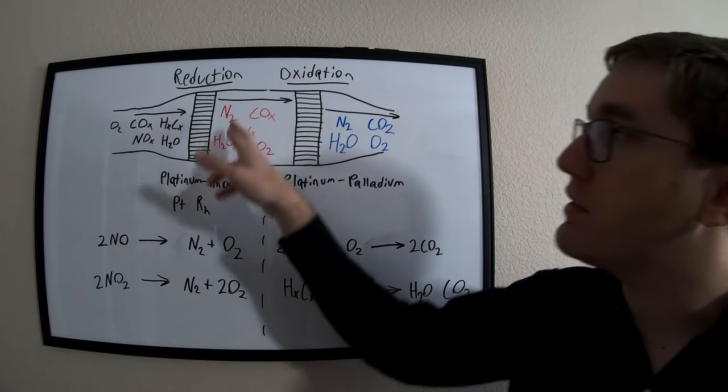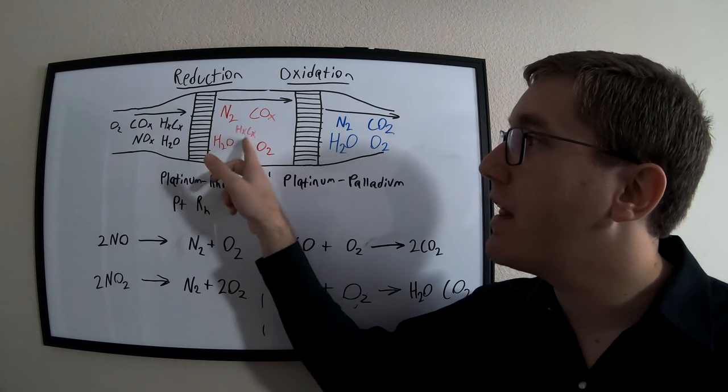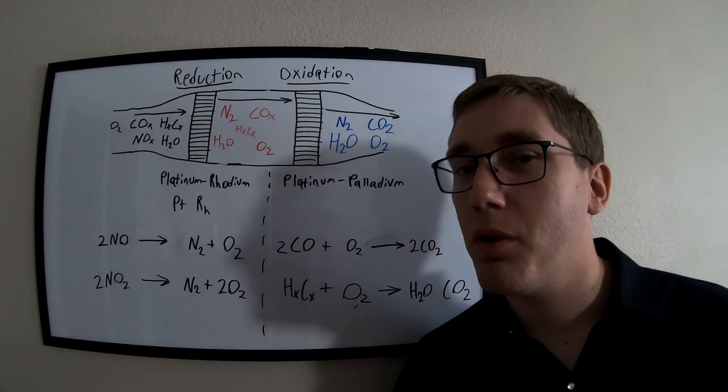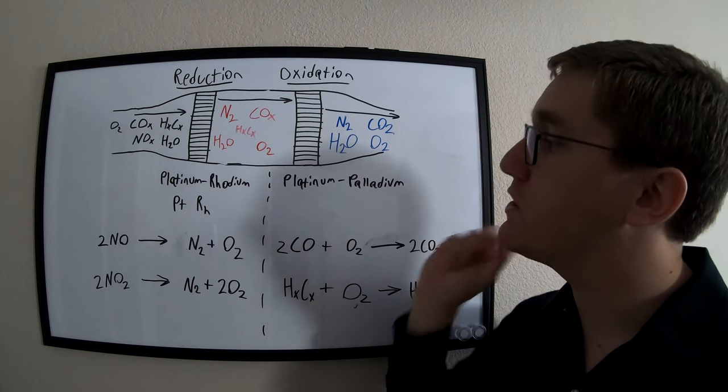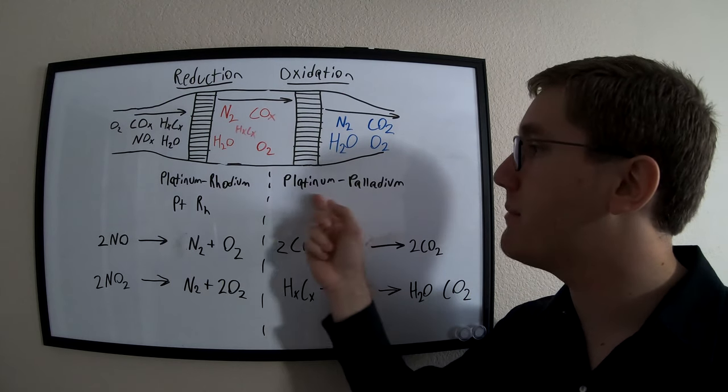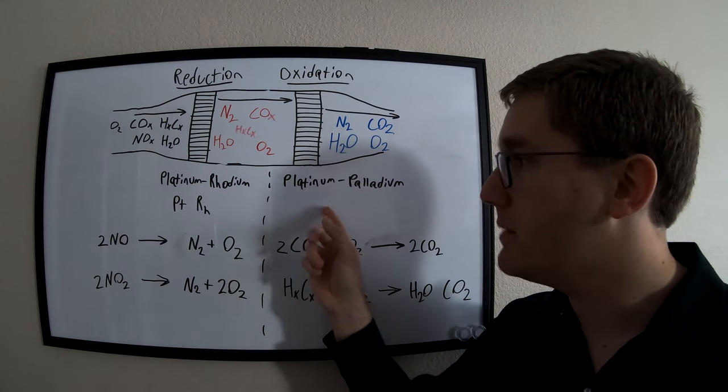Now, at this point, we still have some of that carbon monoxide as well as some of that unburned fuel in the form of those hydrocarbons. With the oxidation phase, we are now using a platinum palladium type material, Pt-Pd, and what this phase is going to do is going to combine some of that unburned fuel and that carbon monoxide into carbon dioxide and water.